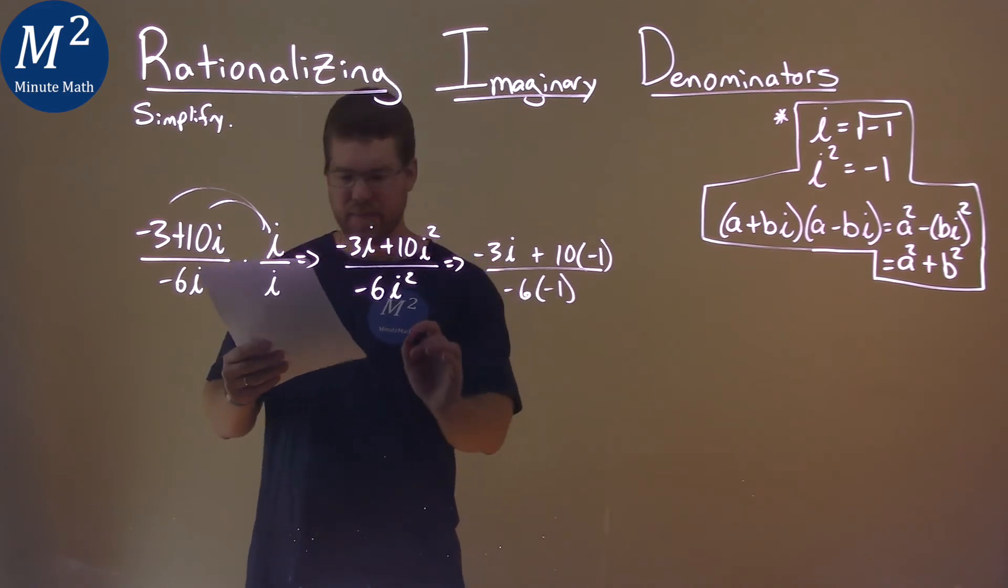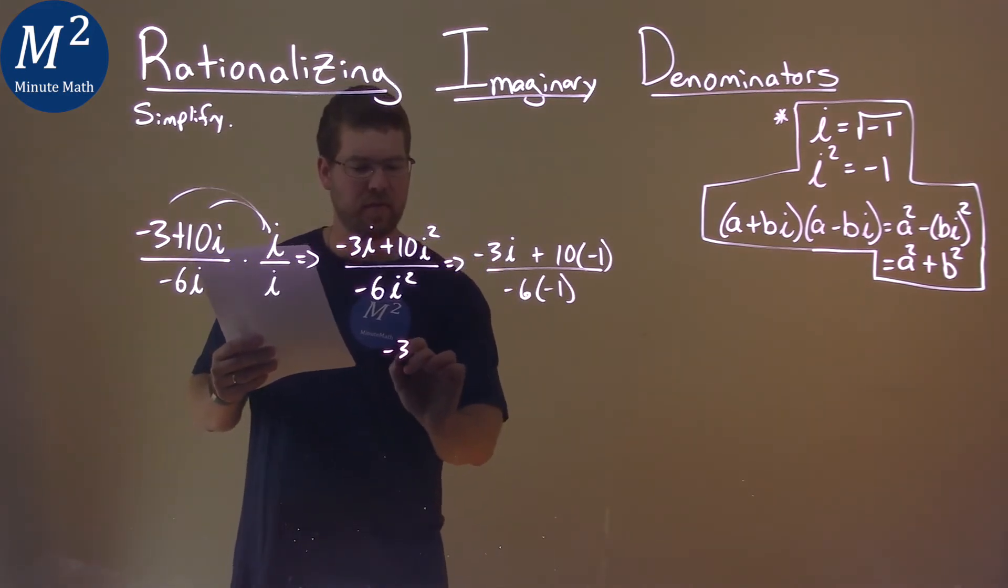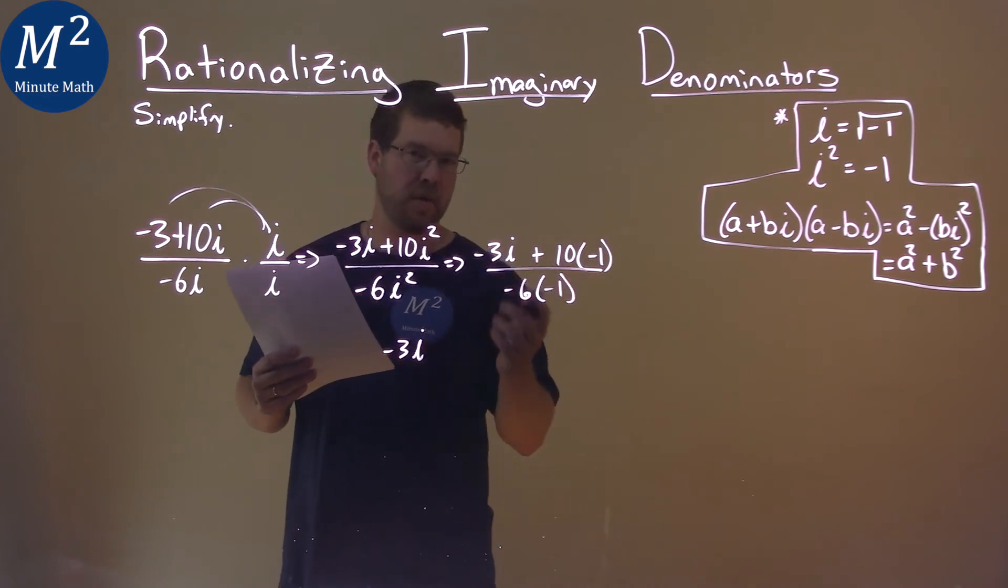Numerator, we still have the negative 3i. It stays up here, so negative 3i. And then 10 times negative 1 is minus 10,